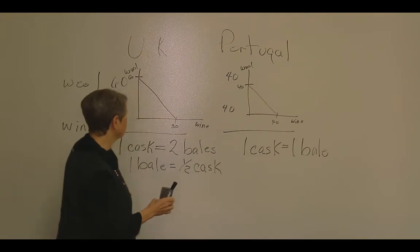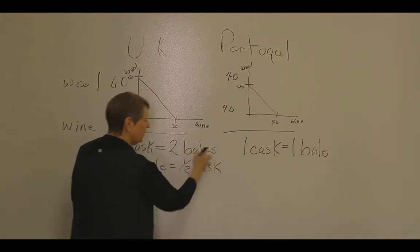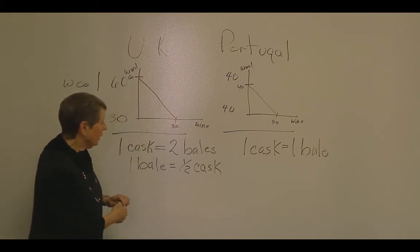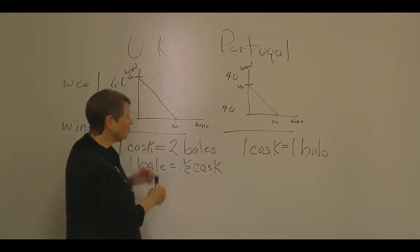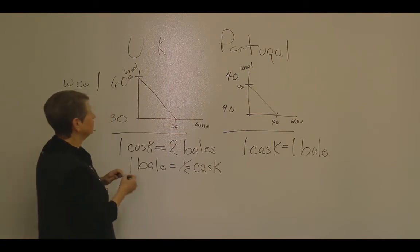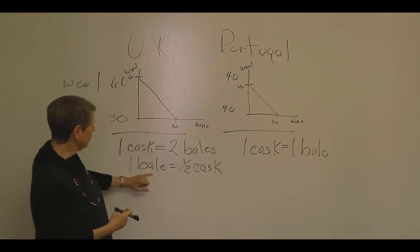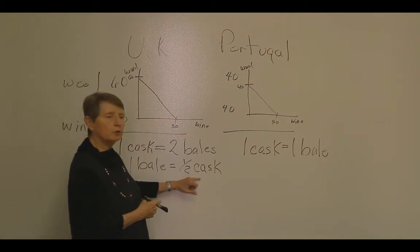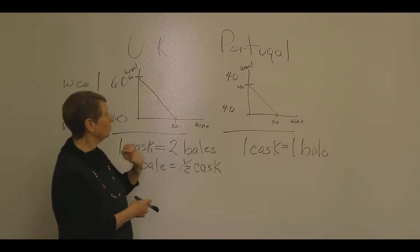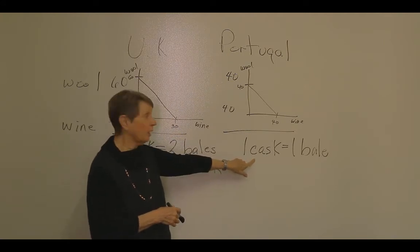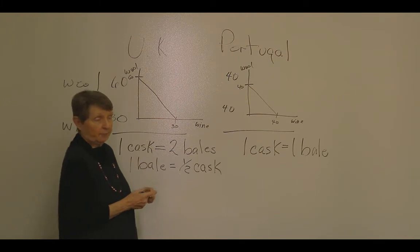To illustrate the gains from trade, we use information about productivity to determine a trading range. If these two countries decide to trade, the first thing we have to do is decide who produces wool and who produces wine — and to do that we talk about comparative advantage. The United Kingdom has the comparative advantage in wool: a bale costs only half a cask there, but costs a whole cask in Portugal. Portugal has the comparative advantage in wine: a cask costs only one bale there, but costs two bales in the United Kingdom.